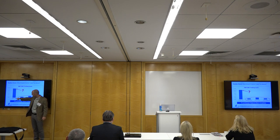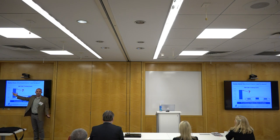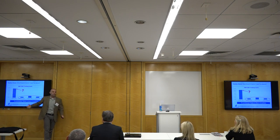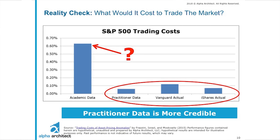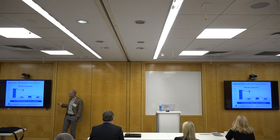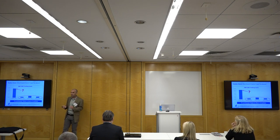So AQR says: let's do a benchmarking. We'll estimate the cost of executing the S&P 500 using the academic technique with their data, and using our technique and our data. What they show is that using their approach and their data, they estimate the cost of trading the S&P 500 is around 6 bps — almost perfectly in line with reality. Whereas using the academic version with their data, it costs over 60 basis points to trade the S&P 500. That's not true. So they kind of caught them — the reason there's a magnitude difference is because the academic approach is worse.